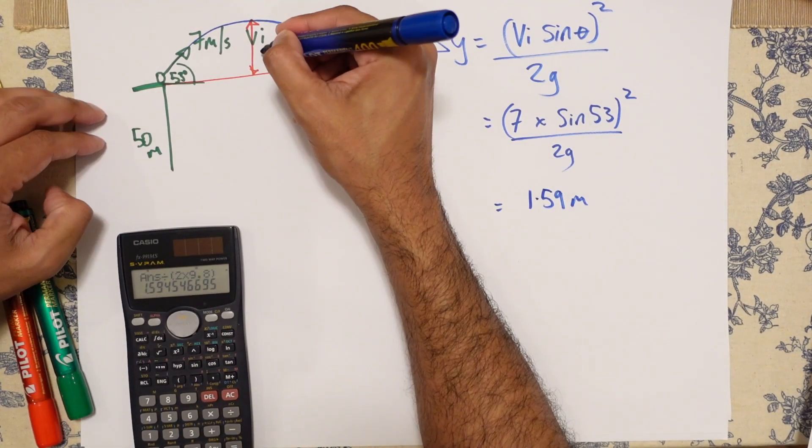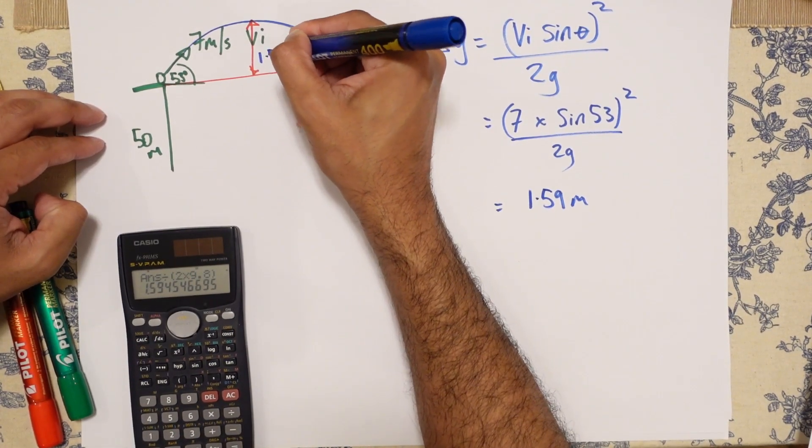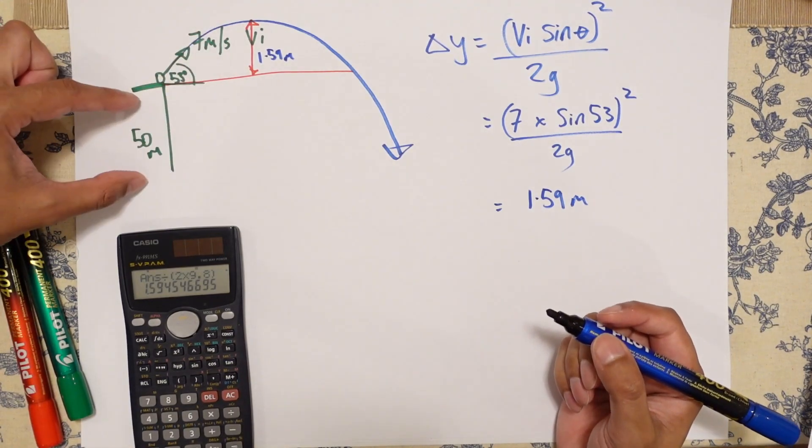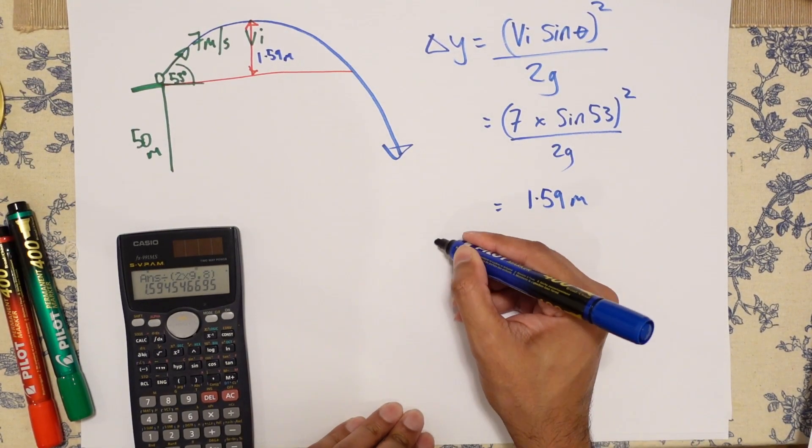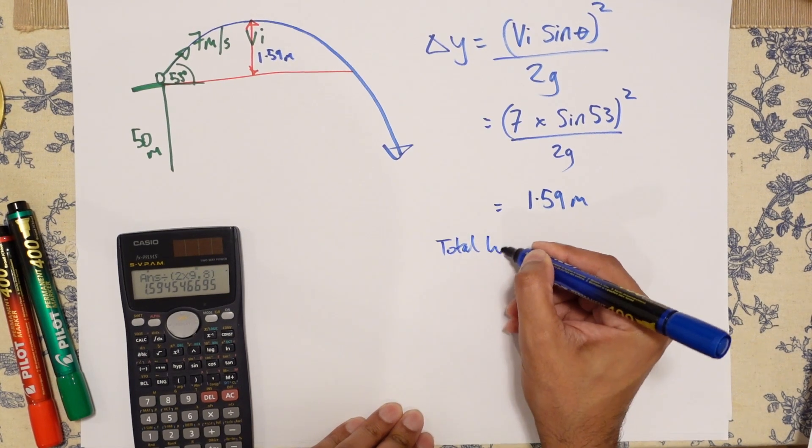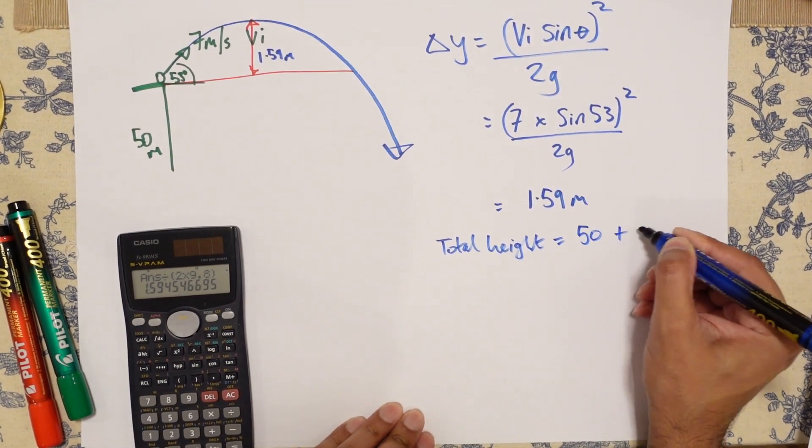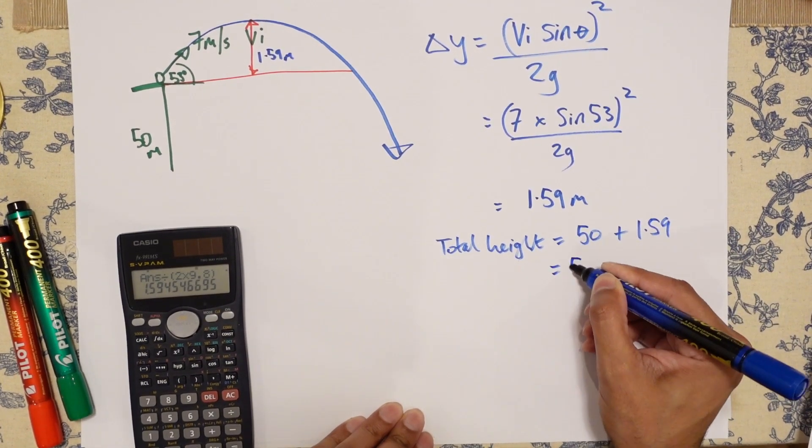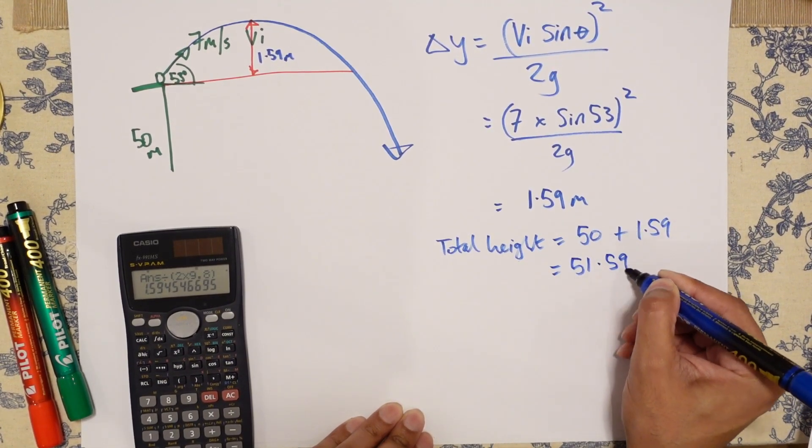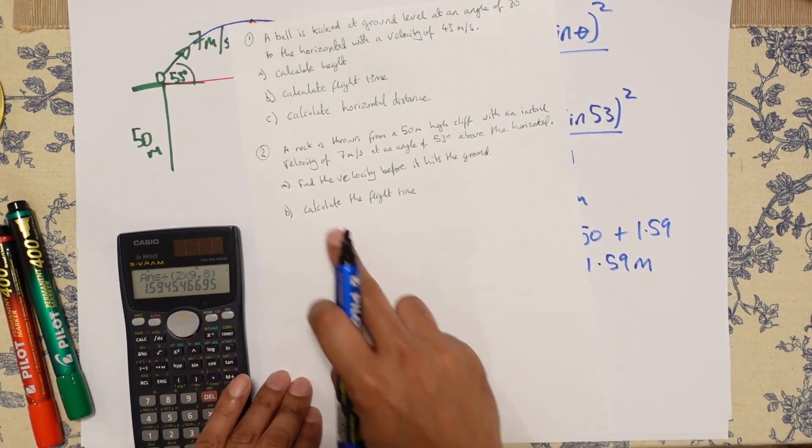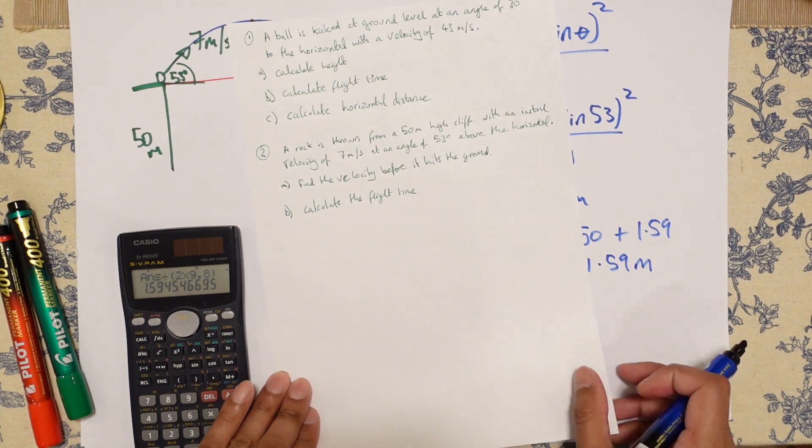And that is 1.59 meters. Now what we then need to do, so this is 1.59 meters. And you can see the total height is 50 plus 1.59, which is going to be 51.59 meters. Now this isn't the end of the question, because we've got to find the velocity before it hits the ground.